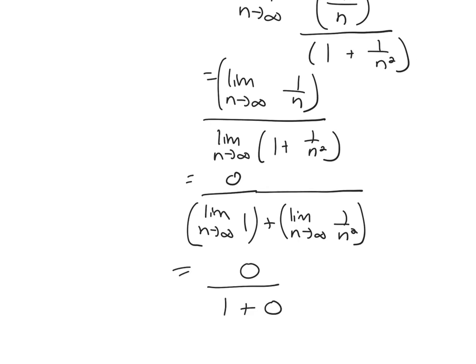So 0 over 1 plus 0 which is 0. Any questions about that?